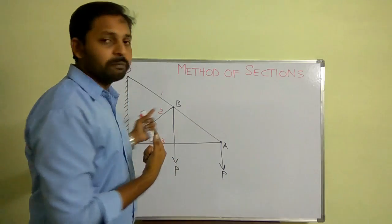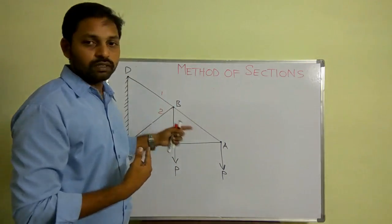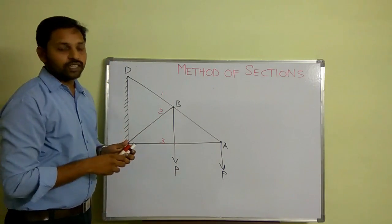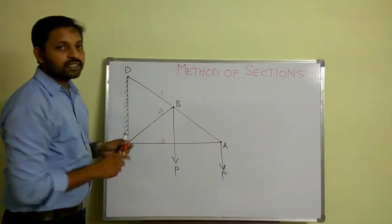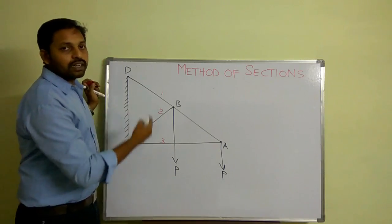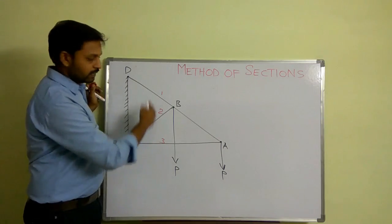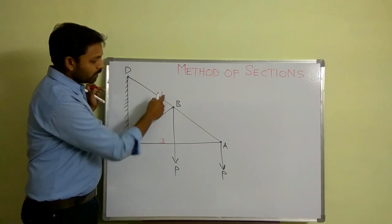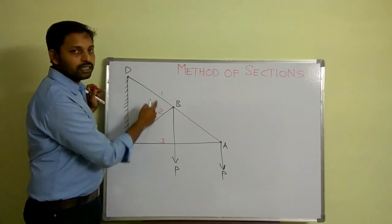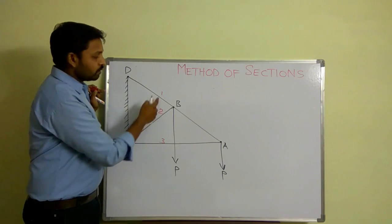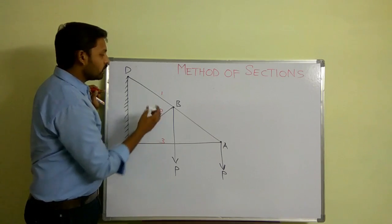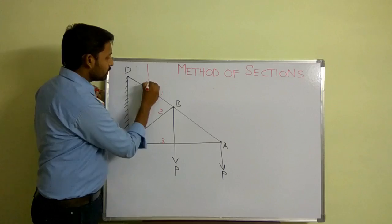I will now explain the method of sections with the help of this truss. I would like to consider a section line such that the members whose axial forces I want to find are intersected. Here there are three members — one, two, and three — whose axial forces I would like to find, so I am drawing the section line accordingly.